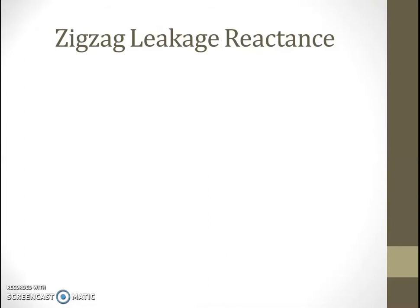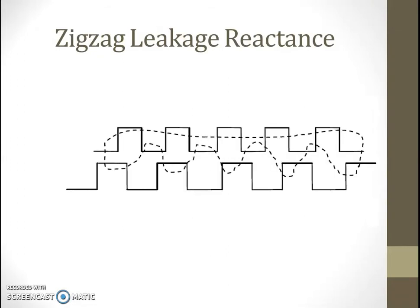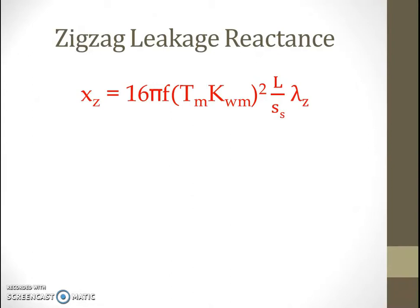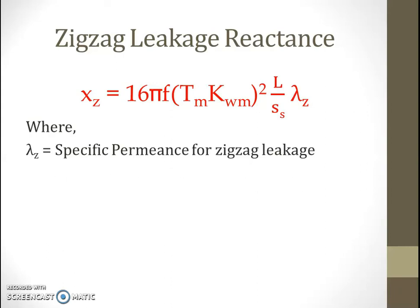Then we have zigzag leakage reactance. We have stator as well as rotor, and a certain amount of leakage flux which travels in a zigzag way — that is known as zigzag leakage flux. Zigzag leakage reactance X_zz is given by 16π·f·T_m·K_wm²·L divided by S_s, multiplied by λ_z, where λ_z is the specific permeance for zigzag leakage.